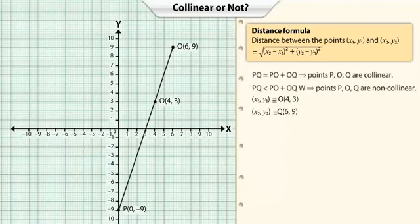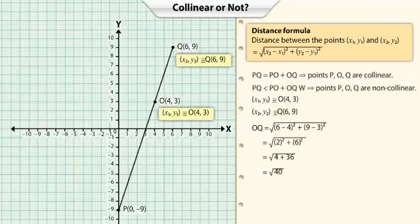Lastly, we find the distance between O(4, 3) and Q(6, 9) which is equal to 2 times the square root of 10.